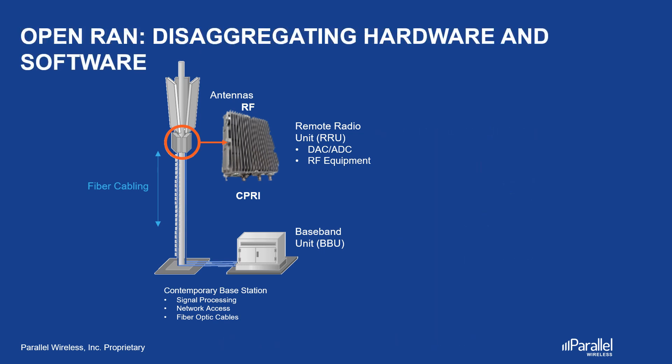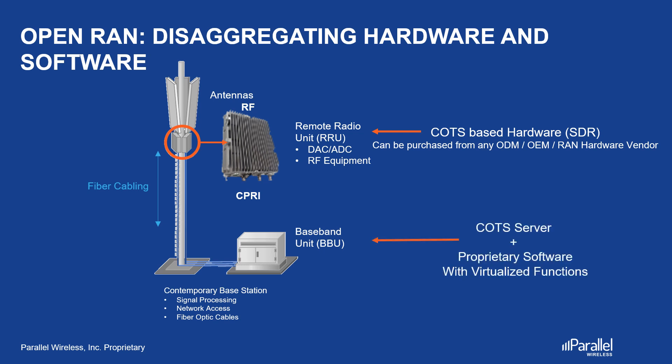With the Open RAN approach, the RRU is now COTS-based hardware that can be purchased from any ODM, OEM, or RAN hardware vendor. The BBU is proprietary software with virtualized functions running on a COTS server — the same as in the case of VRAN. The main thing to remember is that the interface between BBU and RRU/RRH is an open interface, which allows any vendor's software to work with any vendor's hardware. This is the main difference about Open RAN compared to other approaches.